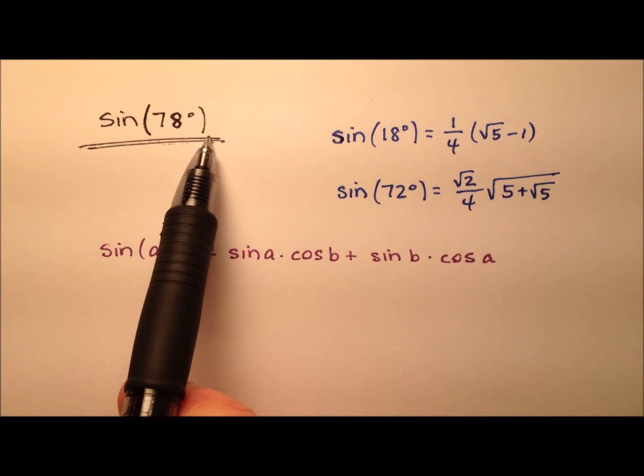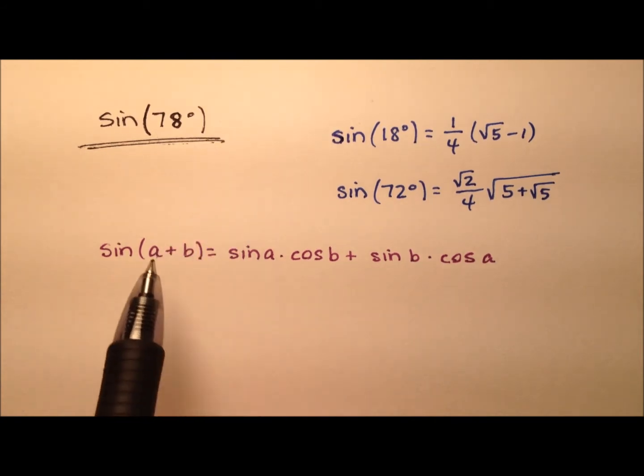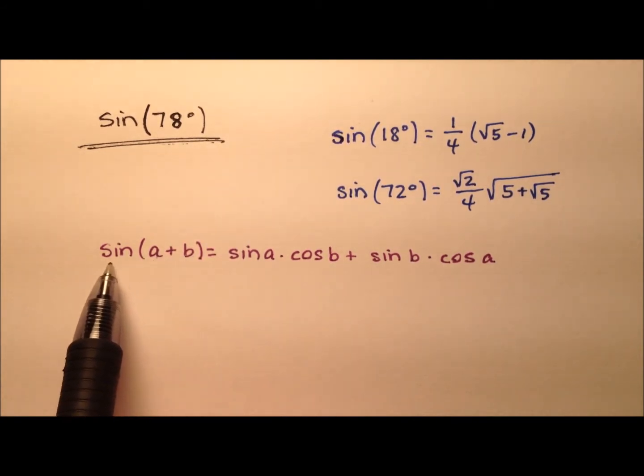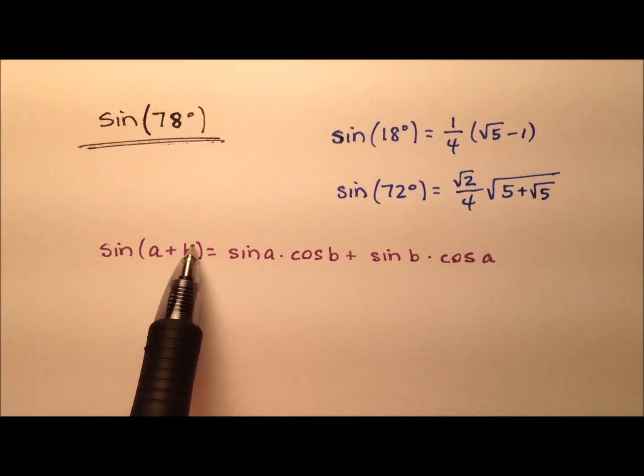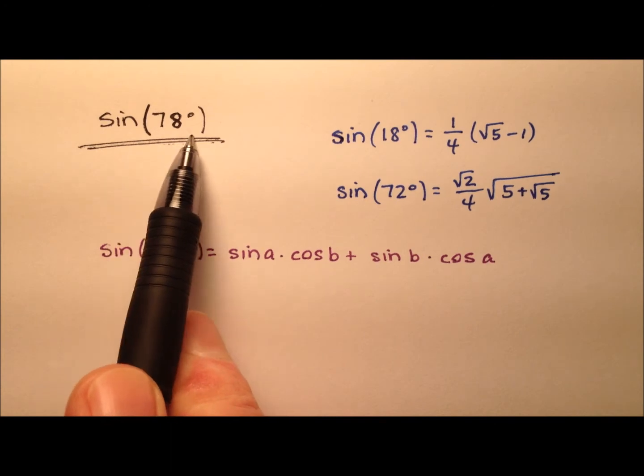We're going to find the exact value for the sine of 78 degrees by using the sum identity for sine. So, we need two angles, a and b, that add up to 78 degrees.